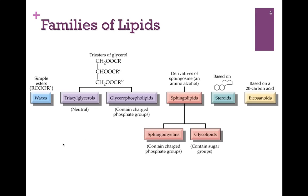Here are the general families or classes of lipids. Waxes on the far left — again we won't be looking at those in any detail. We have triacylglycerols and glycerophospholipids, both built on glycerol backbones. We have sphingolipids, similar in many respects to glycerophospholipids, but with a different backbone — sphingosine — and we'll see how that looks a little bit later.